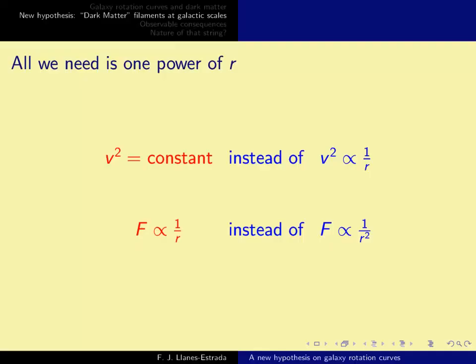Now if you watched the earlier clip, then you know that all we need is one power of r. This comes about because the square velocity in these galaxy rotation curves is constant, as opposed to one over r, which is what Kepler would tell us and what we see in the solar system.